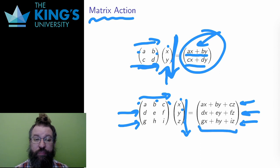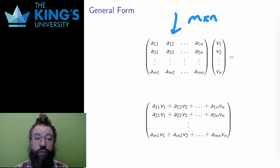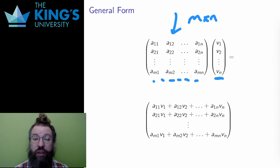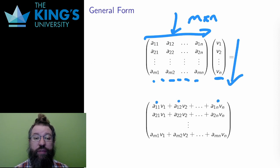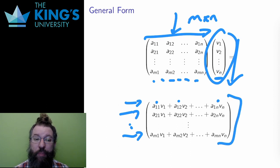This produces a new three-dimensional vector. This is the matrix action. For the general case, suppose I have an m by n matrix — m rows and n columns — with entries a_ij, where the first index is the row and the second is the column. An m by n matrix acts on a vector of length n; the length of the vector must match the number of columns. For each row, I go across the row and down the vector, multiplying and adding. The result is a vector of length m, one component per row.